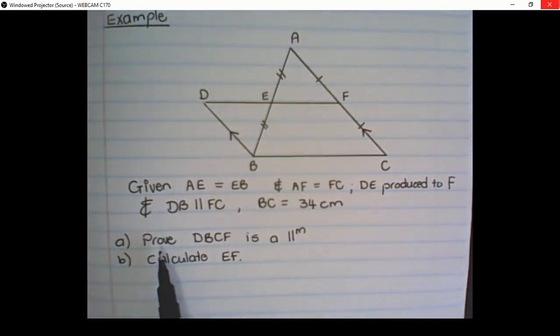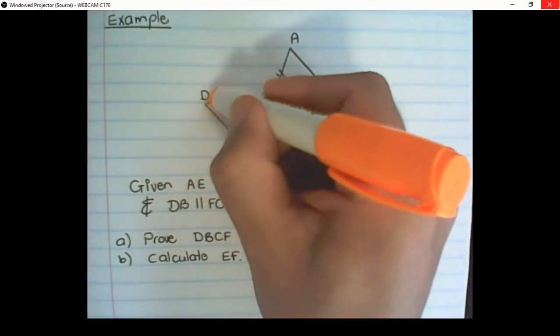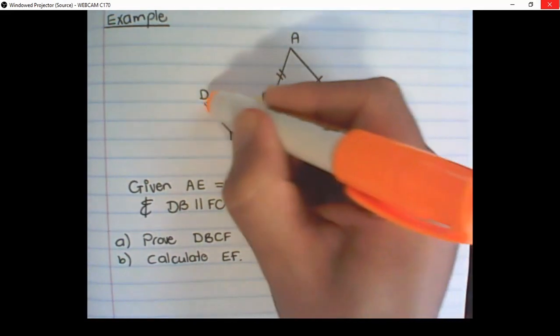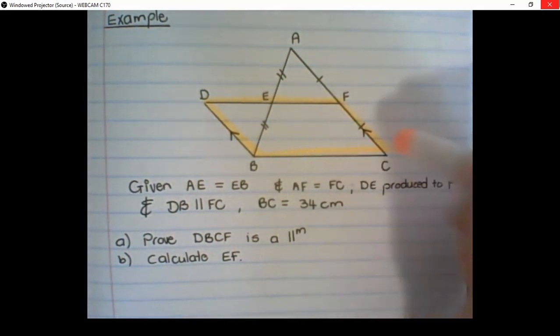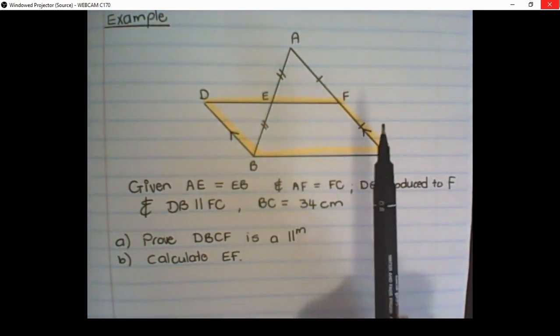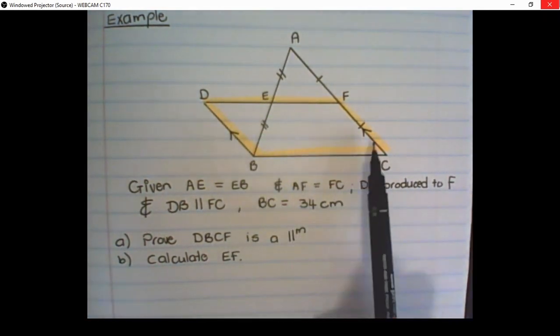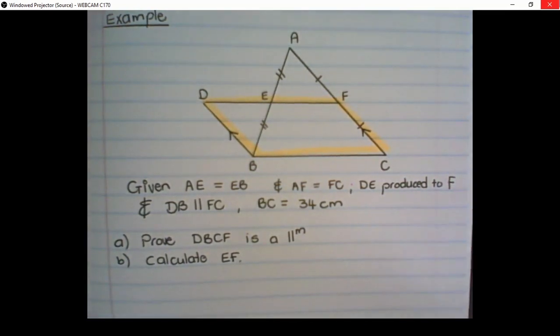The first question is prove that DBCF is a parallelogram. If we look at the sketch, we have DB, CF. If I highlight it, I can see it looks like a parallelogram, but now we want to prove that it is a parallelogram. And this is how we are going to do it.